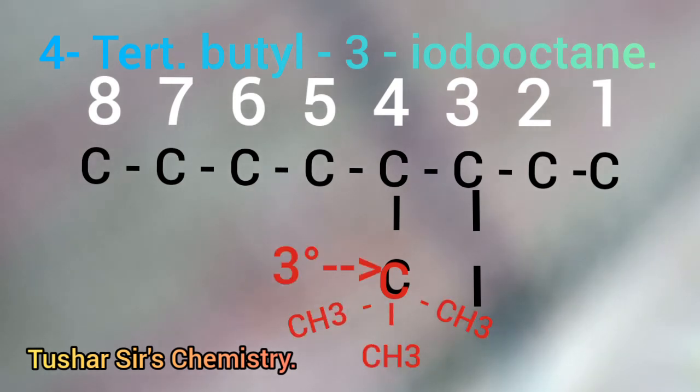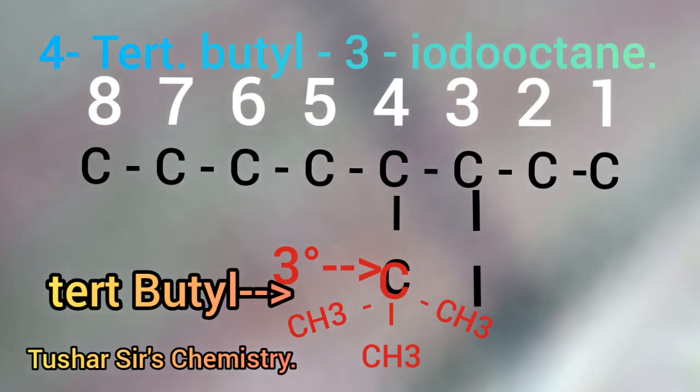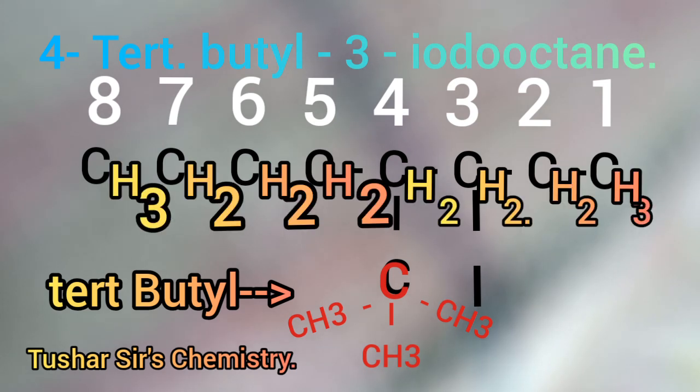And the middle carbon is a tertiary carbon, so this is a tertiary butyl. And hydrogen atoms are written along with these carbon atoms: CH3, CH3, CH3, CH3. You see, and this is 4-tert-butyl-3-iodooctane.